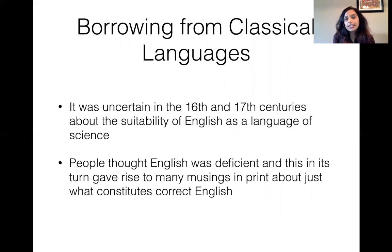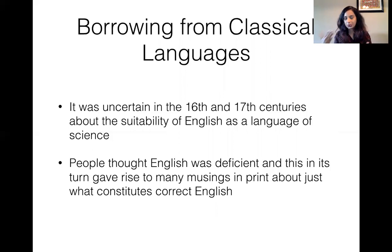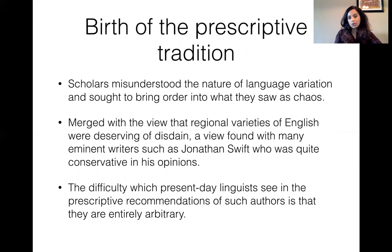In the Early Modern and Late Modern English era, people were not sure about English as the language of science, because English was a peasant language in the Old English and Middle English eras. It started rising during the Tudor dynasty, but people really thought that English was not a good language for science and didn't really want to write in it. This is really where we start to see the birth of what is known as the prescriptivist tradition.